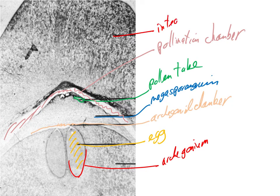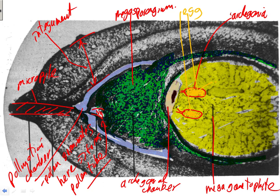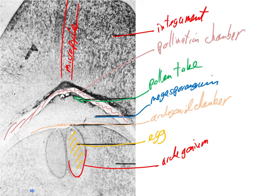Outside the pollination chamber is the integument. Through the integument the micropyle would run, though it's not shown in this slide — it would be in that area. Comparing this picture with the last one, which is actually a later stage in development, you can see that the integument has thickened, the megasporangium has thickened, and the gametophyte has also grown. The whole thing is growing during this time.